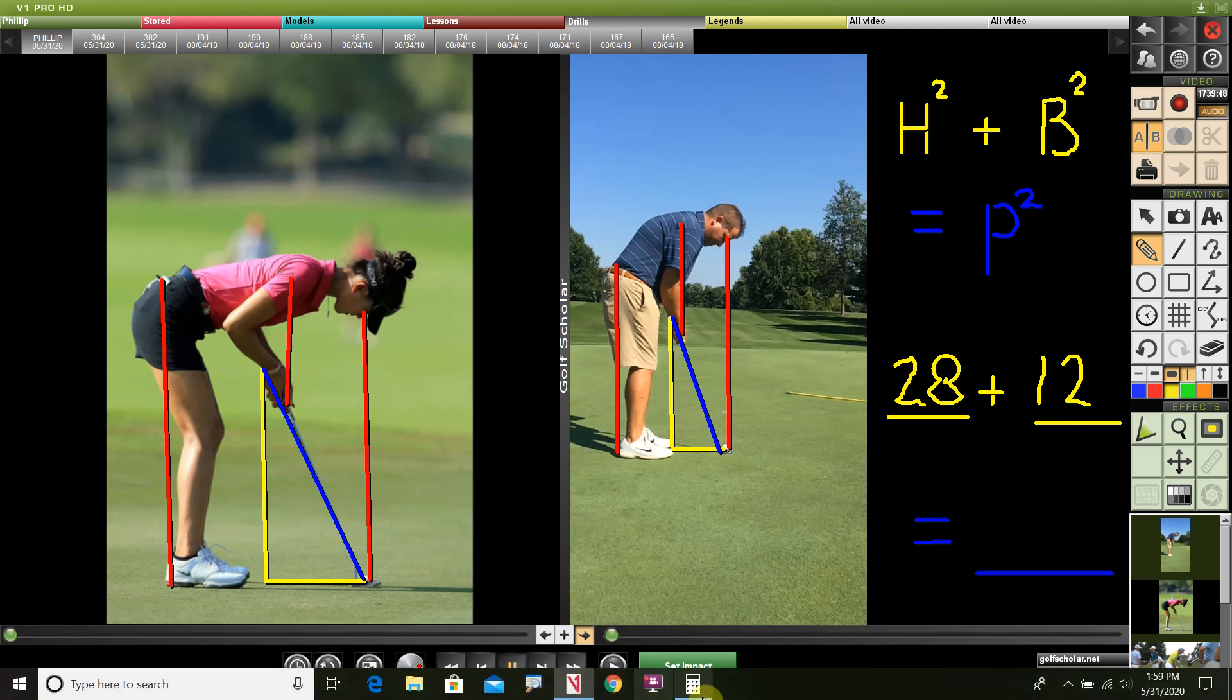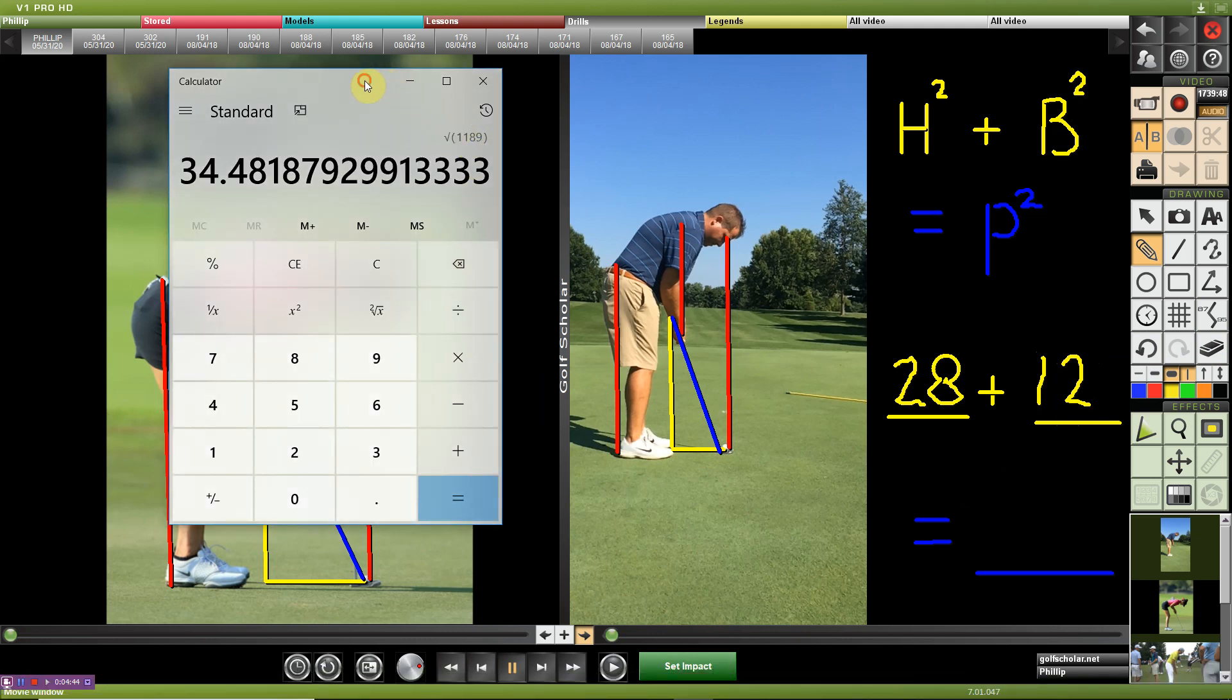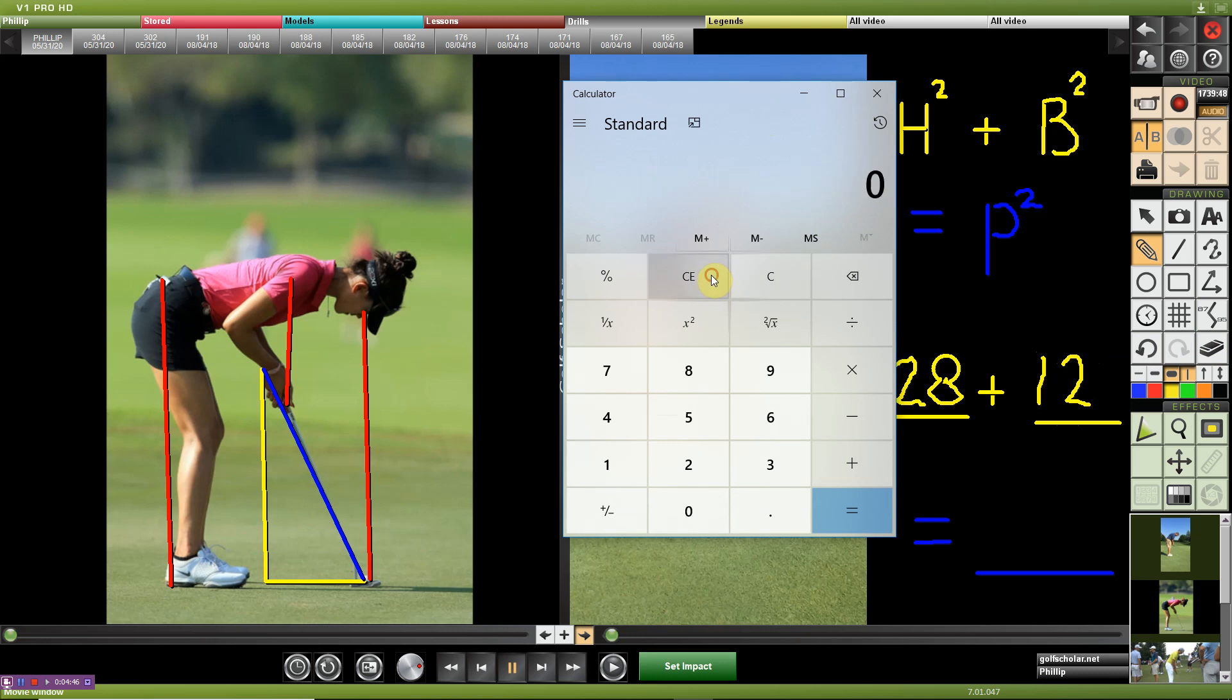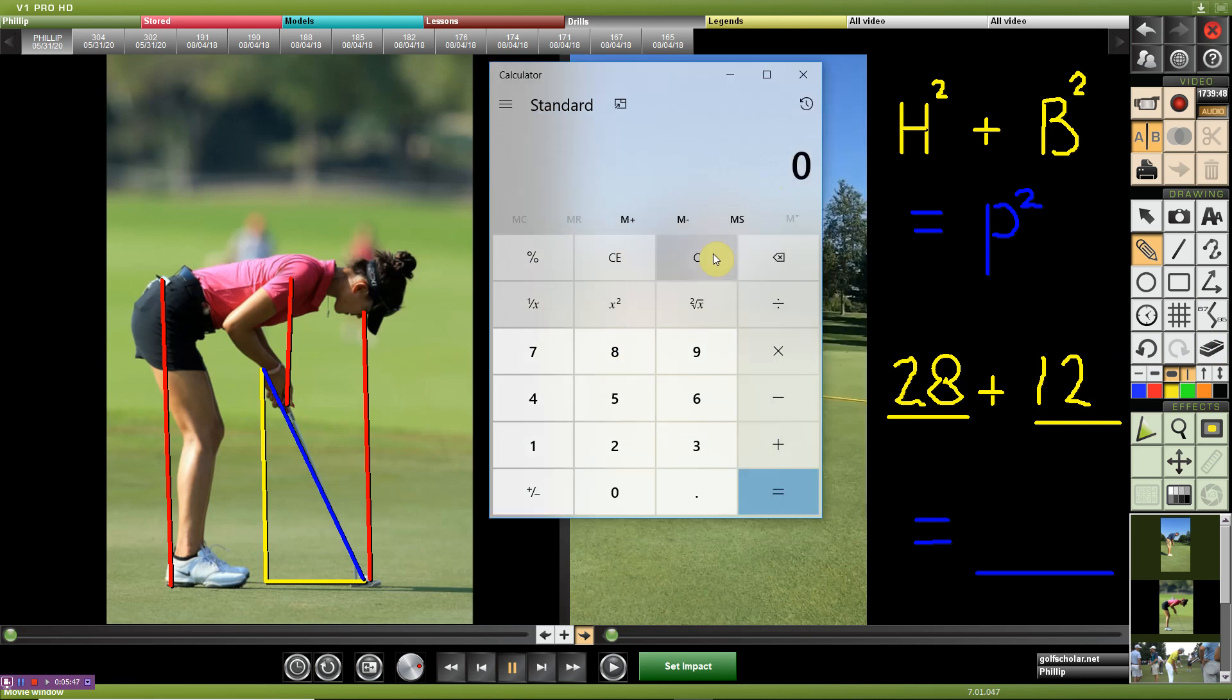So again, we'll pull up the calculator, just to give another example how the math's done. So for her, the hand distance was 28 squared, so that's 784, plus ball distance squared. So from this point there, for her, it was 12 inches, so 12 squared, 144, that's going to give us a total of 928.